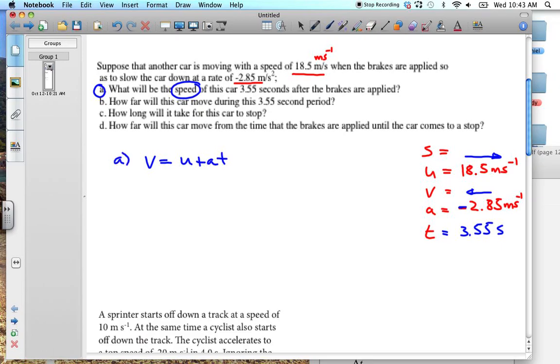So I've got V is equal to U plus AT. This is A, and we're going to get V is equal to 18.5 plus, but now remember you've got this minus 2.85, and we are going at 3.55 seconds. So we do that on our calculator. We can type the whole thing into our calculator in one go. So it's 18.5 plus minus 2.85 times 3.55.